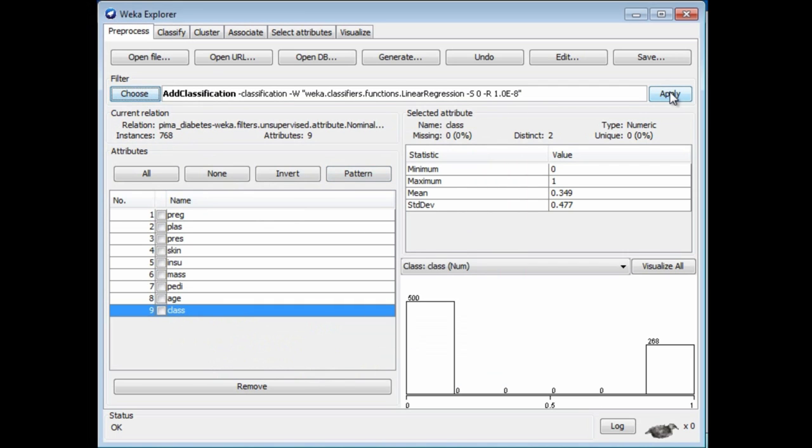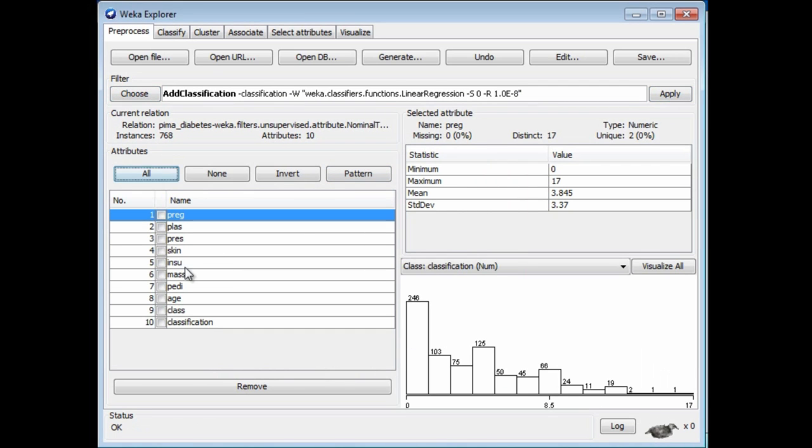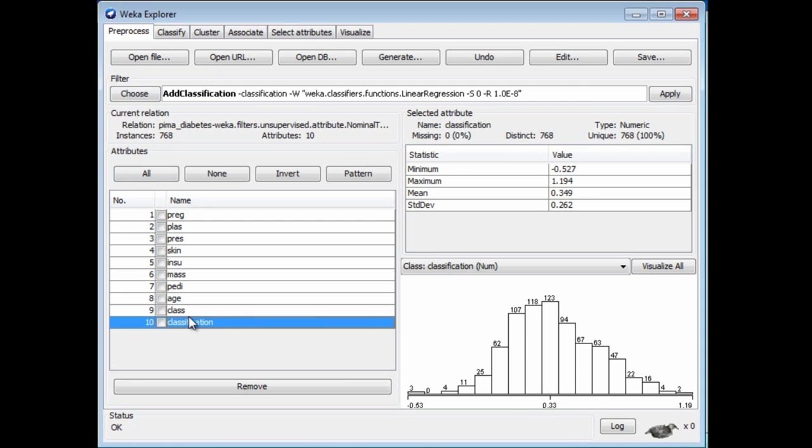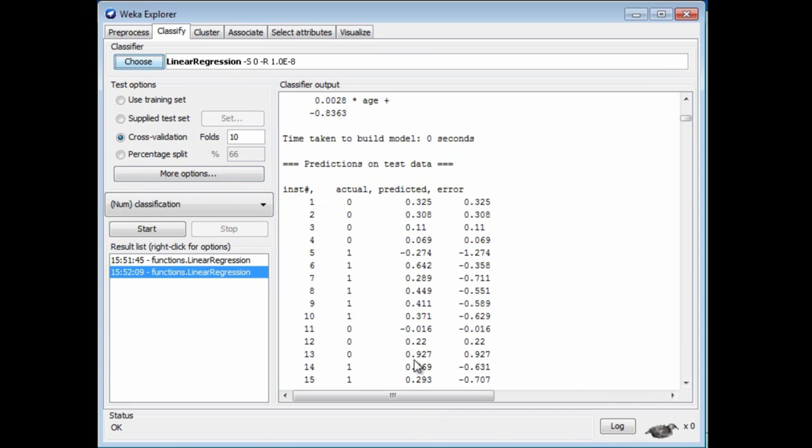If we just run this, it will add a new attribute to the data set. There it is. It's called classification, and it's got these numeric values, which correspond exactly to the numeric values that were predicted here by the linear regression scheme.